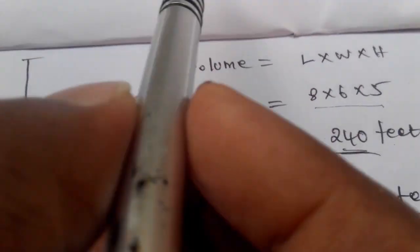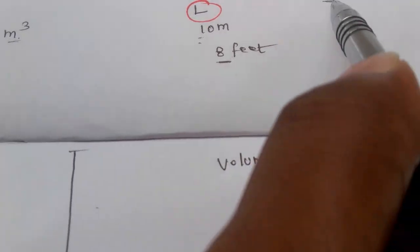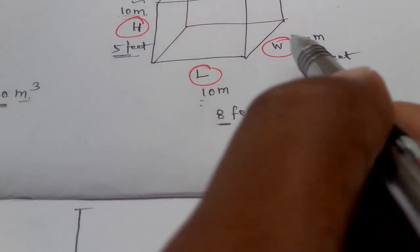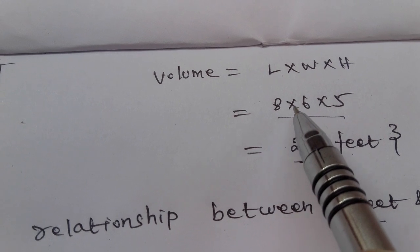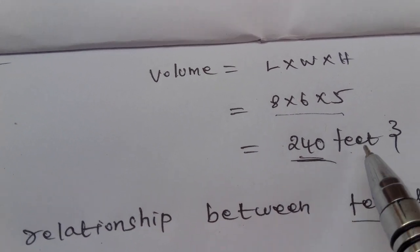If I tell you about feet, I will show you an example here. It is 8 feet, 6 feet, and 5 feet. The length, width, height is 8 into 6 into 5, which is 240 feet cube.